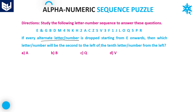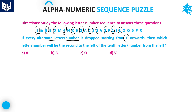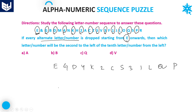Last question. If every alternate letter or number is dropped starting from E onwards, then which letter or number will be the second to the left of the 10th letter from the left? First, drop every alternate letter or number starting from E. The alternates dropped are: E, G, D, 4, K, 2, C, S, 3, 1, L, Q, P. These are the elements dropped from the sequence starting from E onwards.